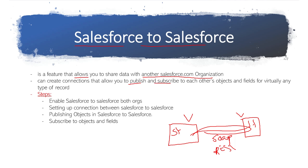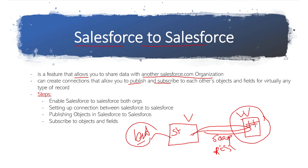We can define between the orgs who publishes and who subscribes — the object and its fields. Virtually, the data will exist in both orgs. For example, in Salesforce I have a lead record and the same lead I want to pass to another Salesforce org. Instead of directly storing it there, I can virtually access this data and publish it to another org.